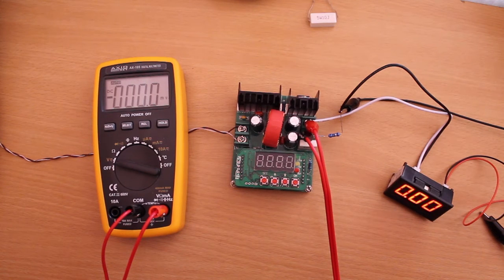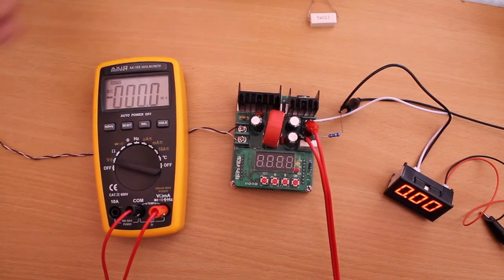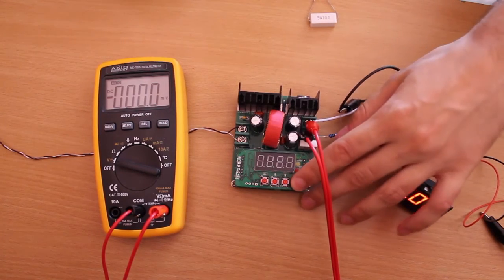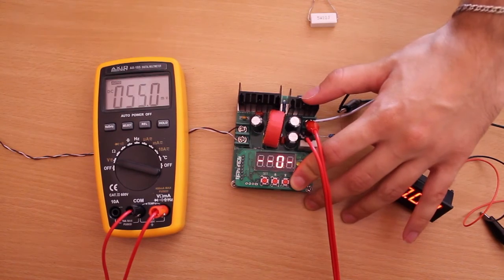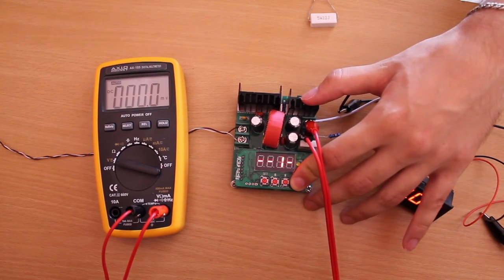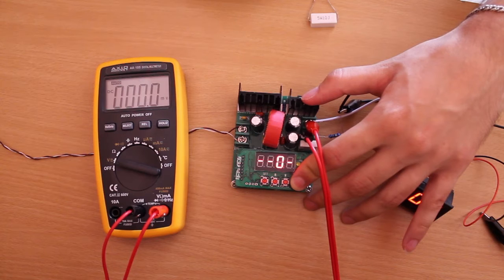There are three hidden functions that you can access by holding down OK while powering the device. The device cycles between them and you release the OK button at the desired function.